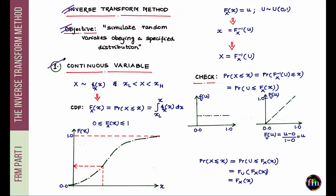Let's begin with the continuous variable first. I am given my random variable — let's denote it by uppercase X, the convention being uppercase for a random variable and lowercase for one particular realization of it. I am also given the PDF or probability density function of my random variable. I'll be working with two random variables, so I'll qualify the PDF or CDF with a subscript. I am assuming that X lies in the interval from X_L to X_H.